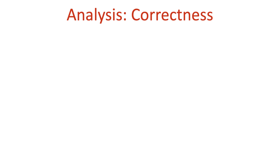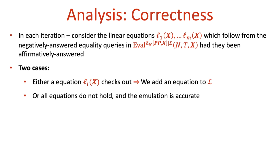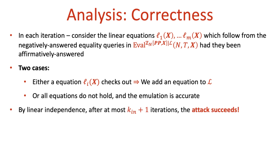Why is our attacker successful? For a given iteration, consider the linear equations L_1 through L_m. There are two possibilities: either at least one equation checks out and we add it to L, or none of them do, in which case the emulation is accurate and we are done. We wish to argue that there cannot be too many iterations in which we add equations to L. This is the case since by the definition of the polynomial-based emulation, the equations L_1 through L_m are not in the linear span of L at the beginning of the iteration. Hence, since we have k_in variables, the attack succeeds after at most k_in + 1 iterations.